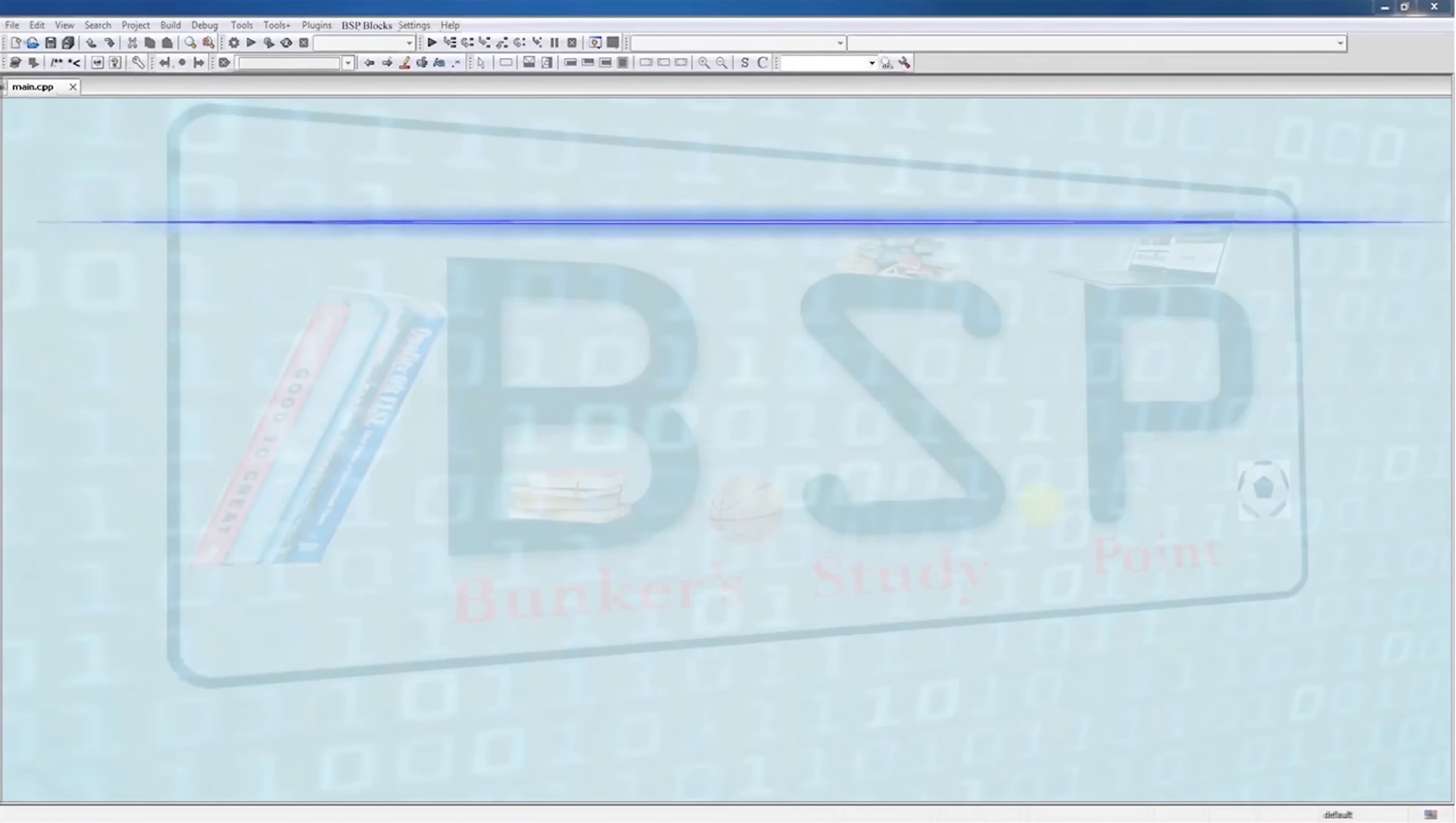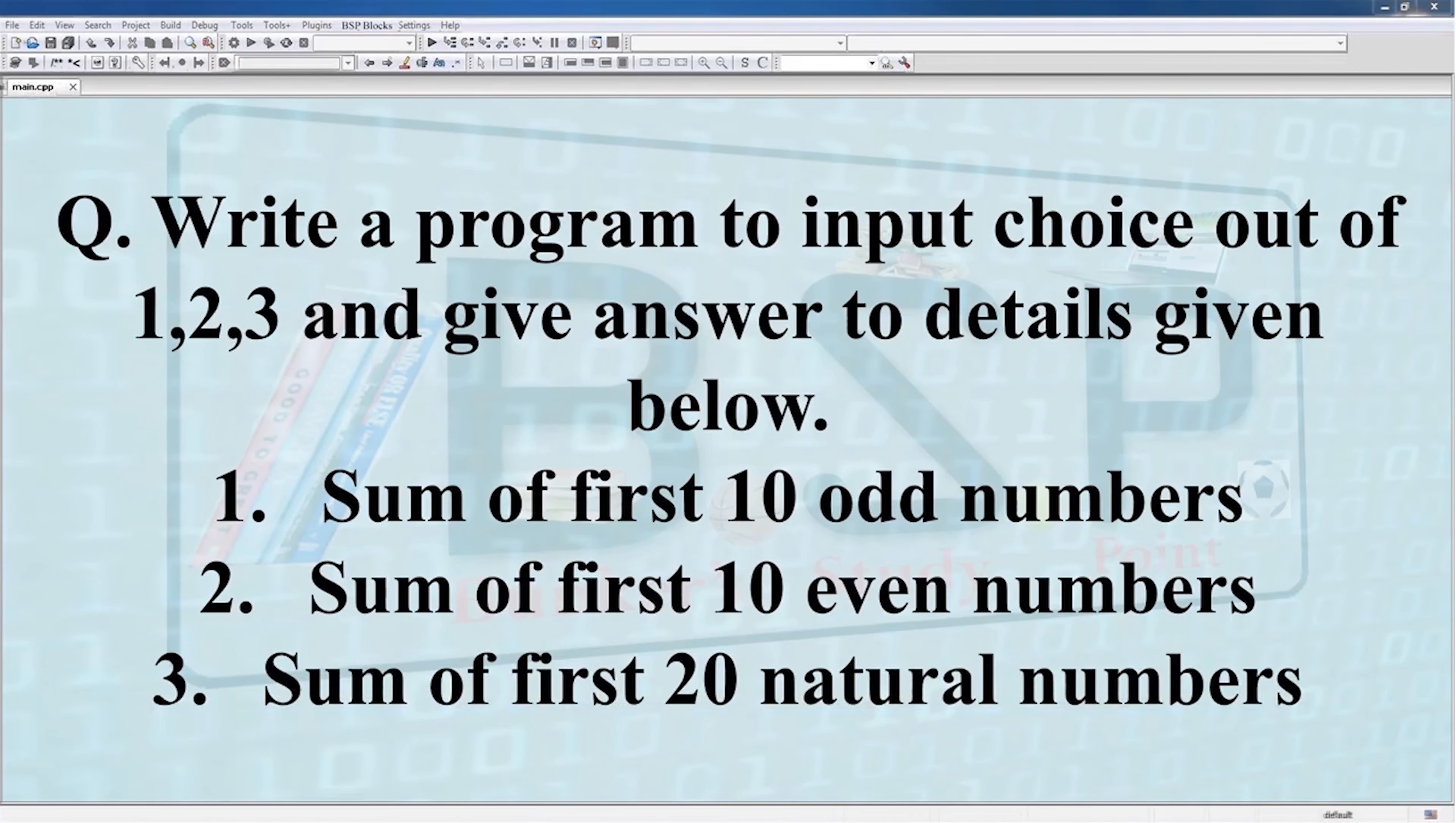Let's have a practice question with using switch. Write a program to input choice out of 1, 2, and 3 and give answer to details below. When a user presses 1, the sum of first 10 odd numbers will be shown. When the user presses 2, sum of first 10 even numbers should be shown. And when the user presses 3, sum of the first 20 natural numbers should be shown on the screen.